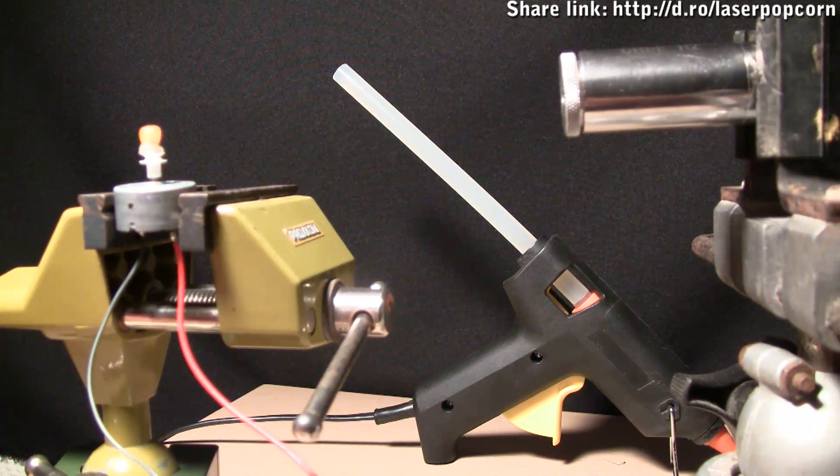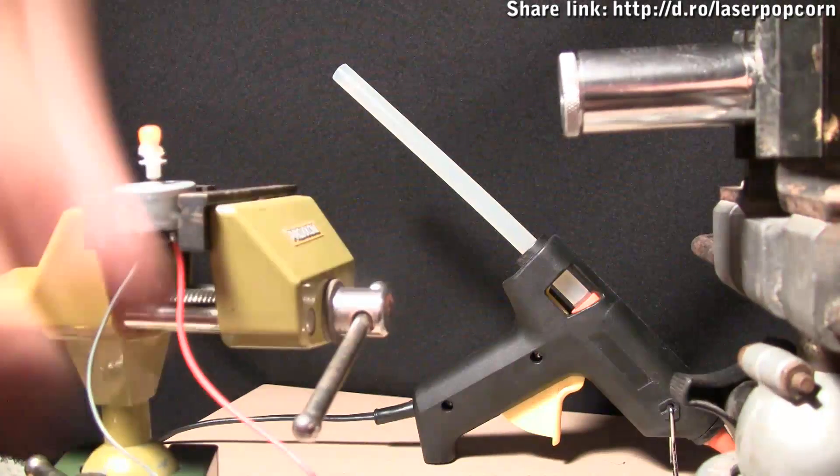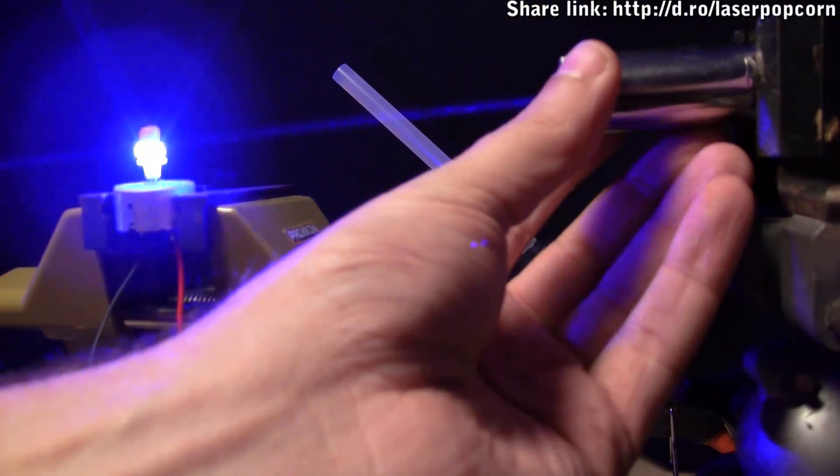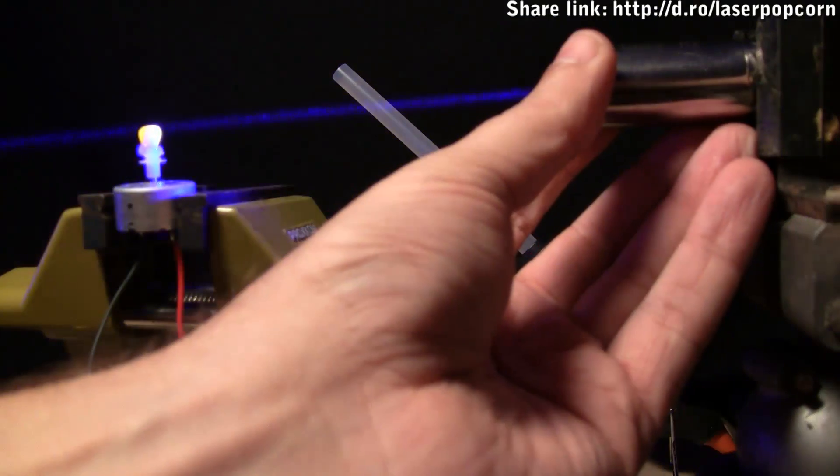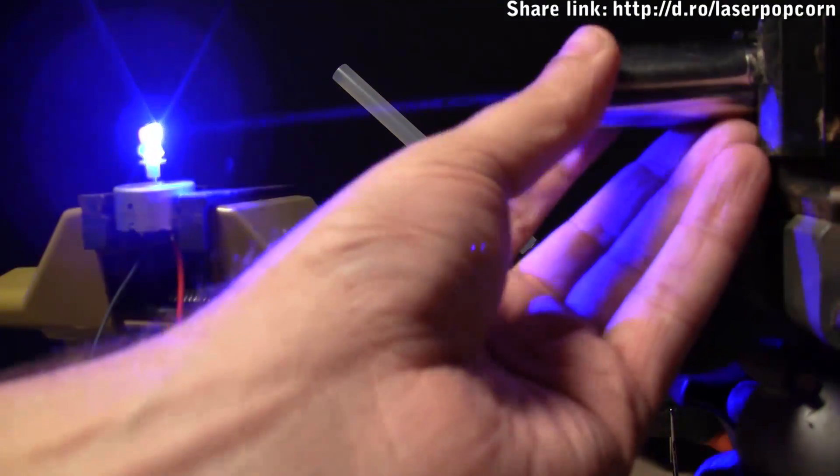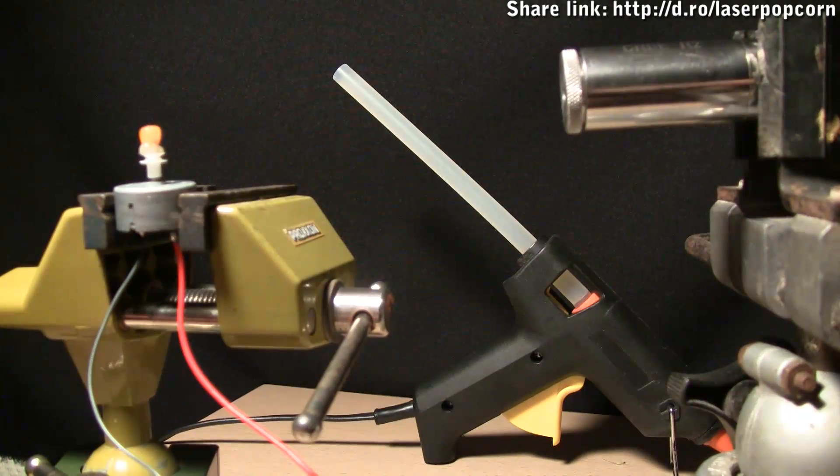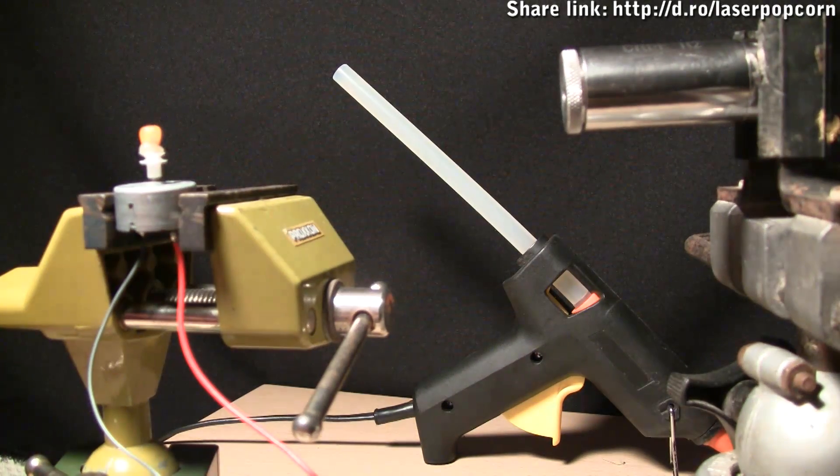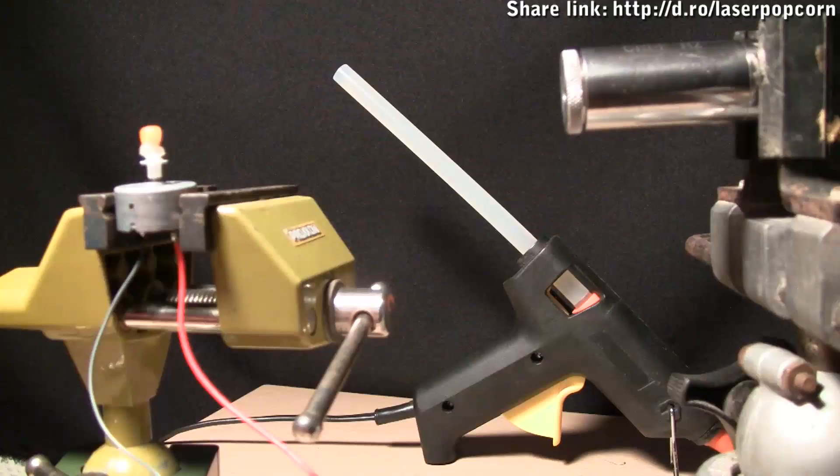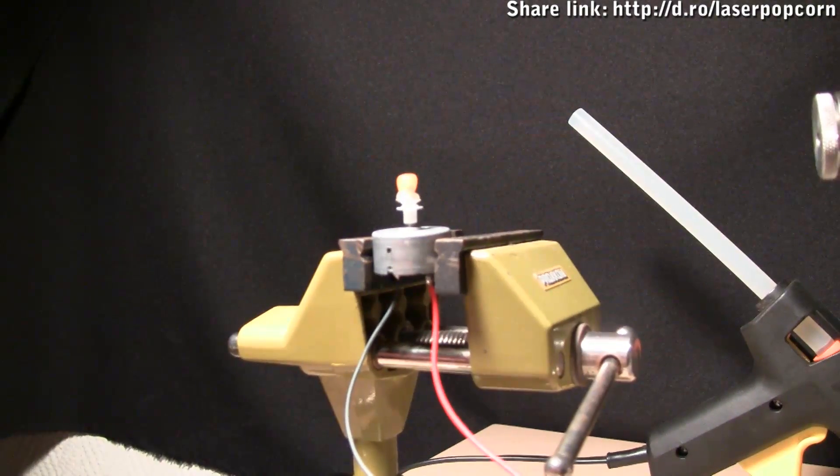Now, we must align the laser in the vise, such that its light falls fully on the kernel, like that. Then, with it properly aligned, we can go ahead and zoom into the kernel and watch as it heats up and pops.